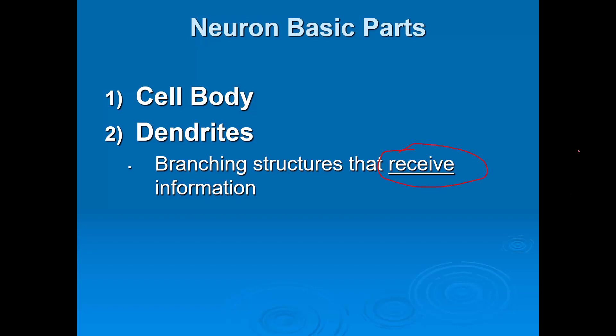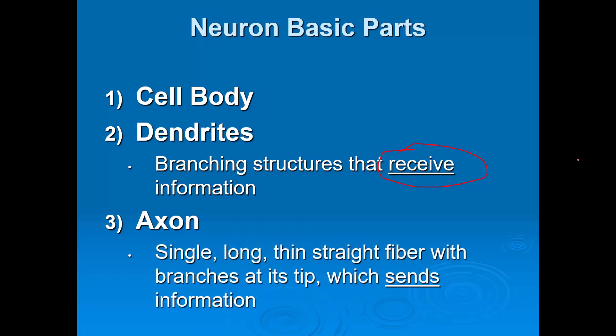Our last basic part is called an axon. The way I want you to think of an axon, it's like the tail of the neuron. In other words, it's a single long thin straight fiber. We're going to find that there's branches at its tip, and more importantly it sends information to the next neuron.